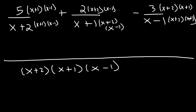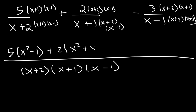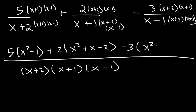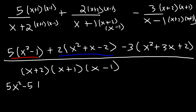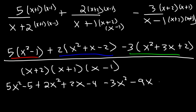We combine everything into a single fraction. FOILing x plus 1 times x minus 1 gives x squared minus 1, so the first term is 5 times x squared minus 1. FOILing x plus 2 times x minus 1 gives x squared plus x minus 2. FOILing x plus 2 times x plus 1 gives x squared plus 3x plus 2. Distributing: 5 times x squared minus 1 is 5x squared minus 5; 2 times x squared plus x minus 2 is 2x squared plus 2x minus 4; and negative 3 times x squared plus 3x plus 2 is negative 3x squared minus 9x minus 6.